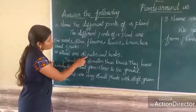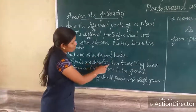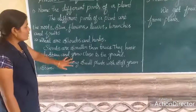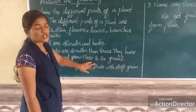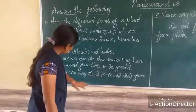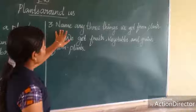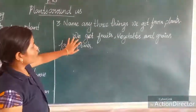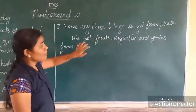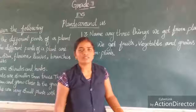Second: what are shrubs and herbs? Shrubs are smaller than trees, they have woody stems and grow close to the ground. Herbs are very small plants with soft stems. Third: name three things we get from plants. We get fruits, vegetables, and rice from plants. Thank you, children.